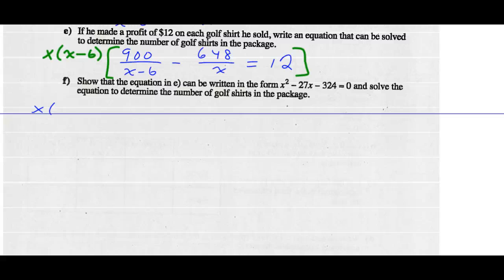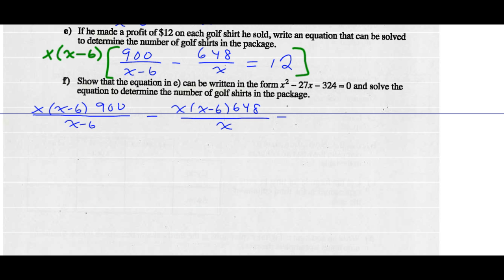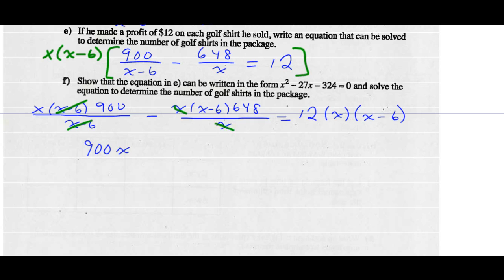So X times (X minus six) times 900 divided by (X minus six), subtract X times (X minus six) times 648 divided by X, should equal 12 times X times (X minus six). We can reduce the (X minus six) in the first expression, leaving 900X. We can reduce the X's in the second expression, leaving negative 648 times (X minus six). And here we have 12X times (X minus six).